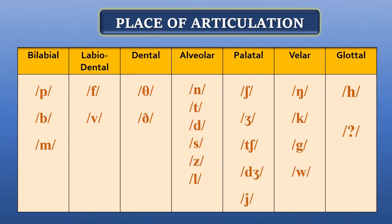Here is a table that categorizes consonant sounds according to their place of articulation. Bilabial: P, B, M. Labiodental: F, V. Dental: TH. Alveolar: N, T, D, S, Z, L. Palatal: SH, CH, J (dʒ), Y. Velar: NG, K, G, W. Glottal: H and the glottal stop.